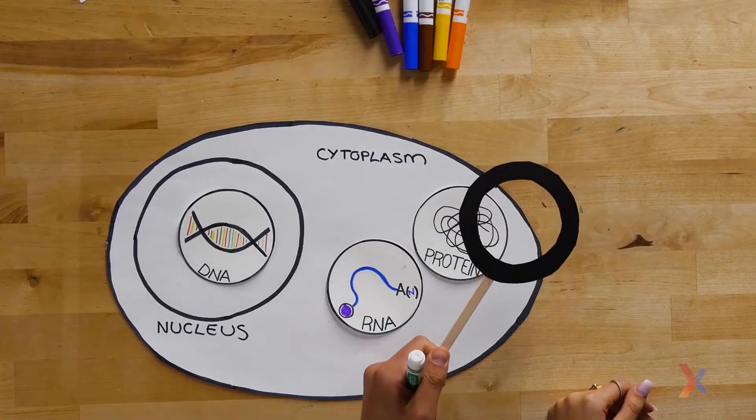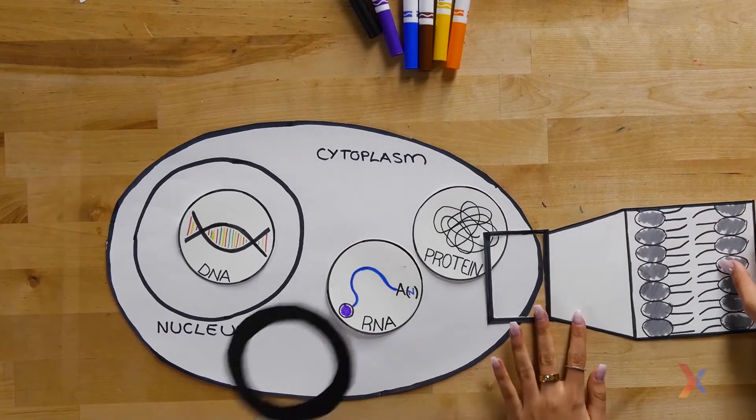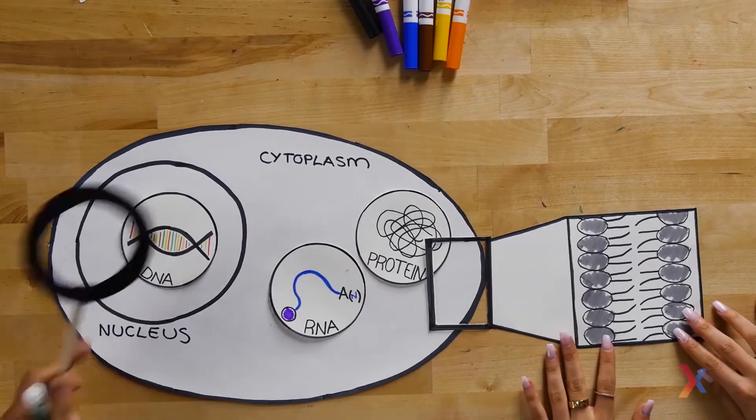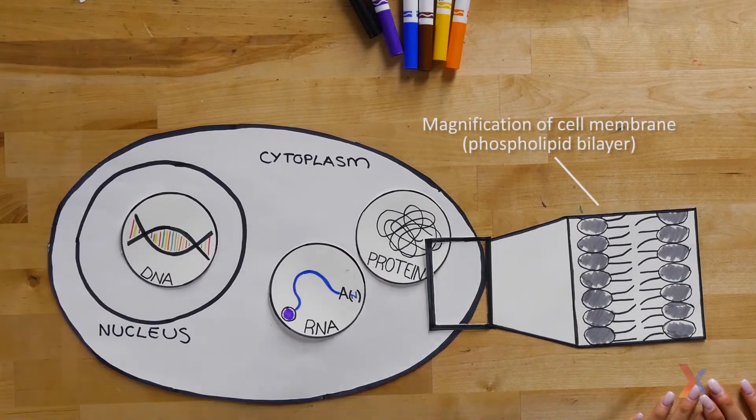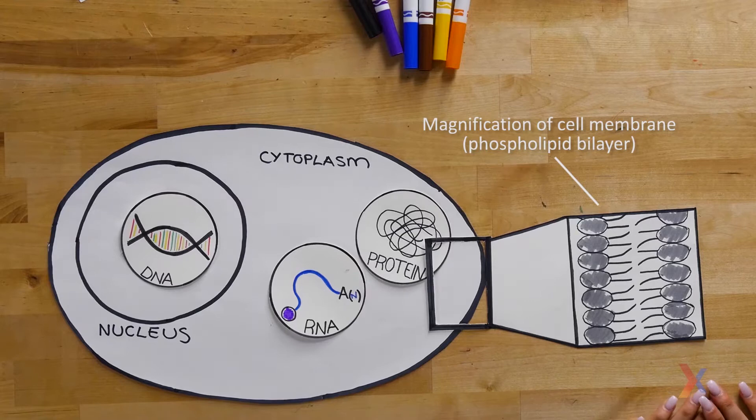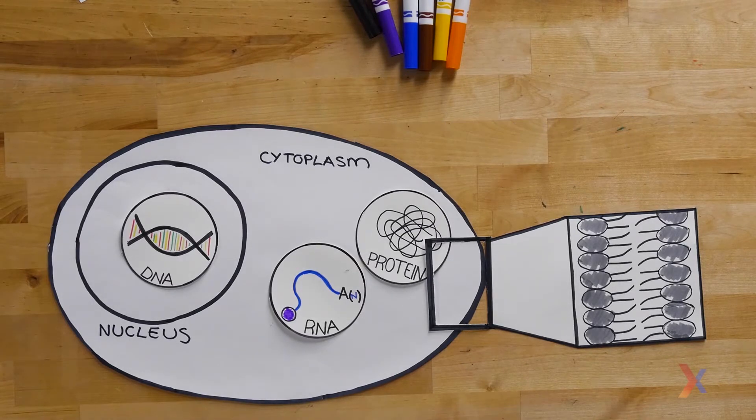To deliver anything into cells, we have to remember that eukaryotic cells are surrounded by a cell membrane that is designed to keep most things out. In this video, we are going to discuss various techniques to overcome the obstacle of getting DNA, RNA, and protein into cells.